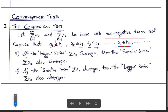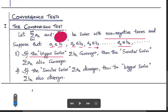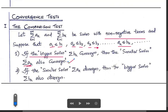That means each term of series a_k is less than or equal to the corresponding term of series b_k. The comparison test says: if the bigger series, summation b_k, converges, then the smaller series, summation a_k, also converges.